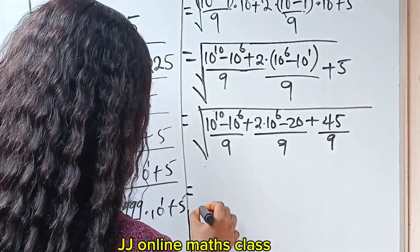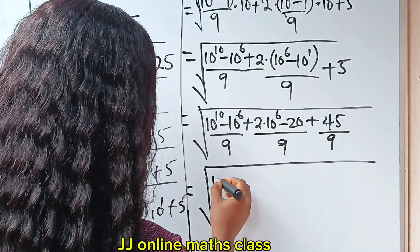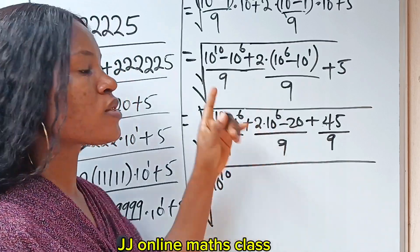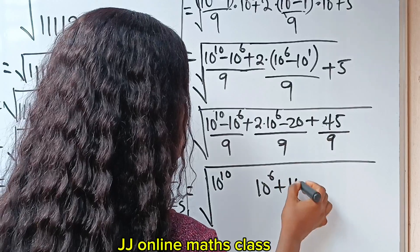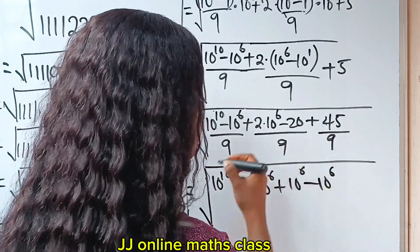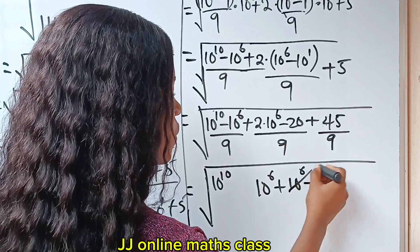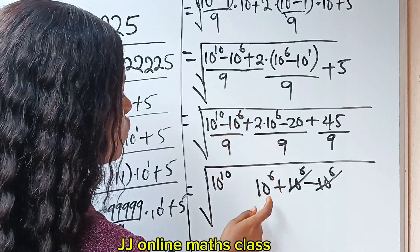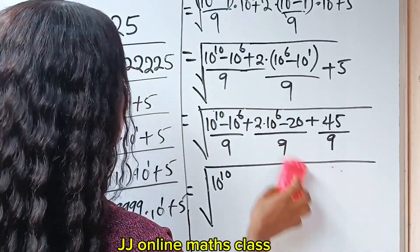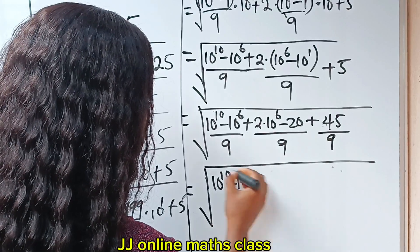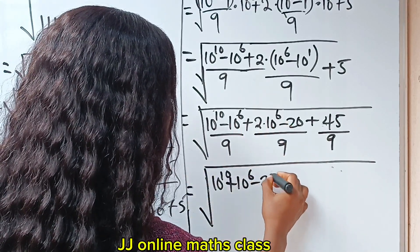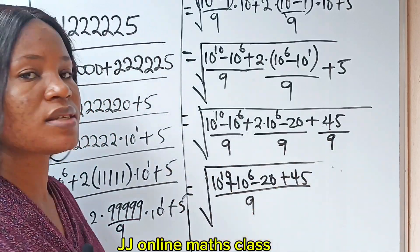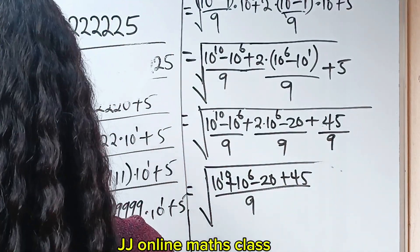So this equals the square root of: 10 to the power of 10, minus 10 to the power of 6, plus 2 times 10 to the power of 6. Now 2 times 10 to the power of 6 means 10 to the power of 6 plus 10 to the power of 6; subtracting 10 to the power of 6 from 2 times 10 to the power of 6 leaves 10 to the power of 6. Then minus 20 plus 45, all divided by 9.